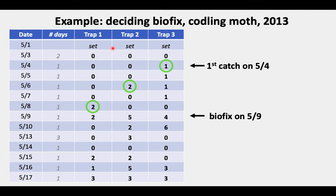Another example: in 2013, we set up our traps on the 1st of May. Checked two days later — all zero. A day later we had 0-0-1. Then we had 0-2-1, 0-0-1, 2-0-0. Finally, I called biofix that year on the 9th of May. But in retrospect, I might not have been conservative enough — I probably could have called it on the 6th of May. So there's no absolute rule; it's more of a gut feeling of when you really are getting sustained flight.